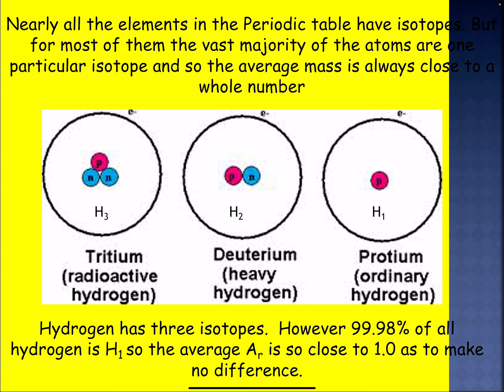As said before, 99.98% of hydrogen has no neutrons — just one proton. Deuterium has one neutron and one proton. Tritium has two neutrons and one proton.